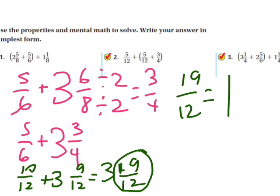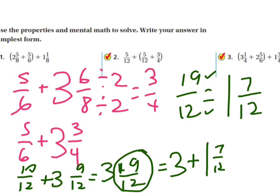12 goes into 19 one time. My denominator stays the same. If I subtract 19 and 12, I get 7. So 3 and 19 twelfths becomes 3 plus 1 and seven twelfths, which is 4 and seven twelfths.